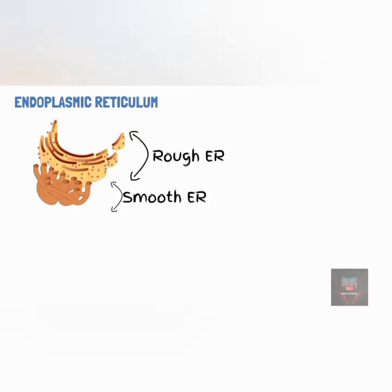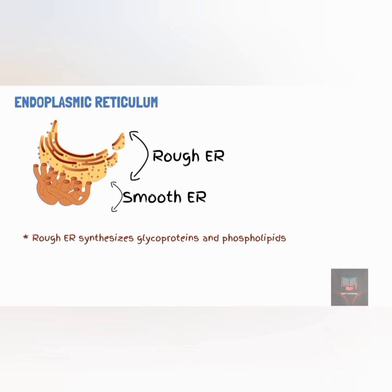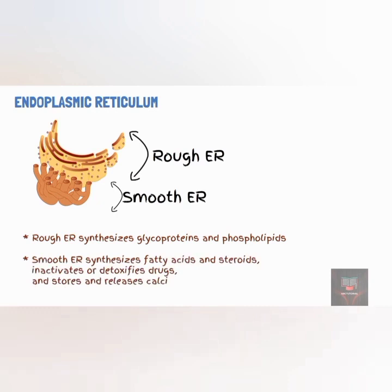The endoplasmic reticulum is a network of membranes in the form of flattened sacs. There are two types: the rough and smooth endoplasmic reticulum. The rough endoplasmic reticulum is continuous with the nuclear membrane and is studded with ribosomes, making it the site of protein synthesis. The smooth endoplasmic reticulum does not have ribosomes on its surface but contains unique enzymes making it functionally more diverse. Its functions include fatty acid synthesis, steroid synthesis, detoxification of drugs, and storage and release of calcium ions that help with muscle contractions.